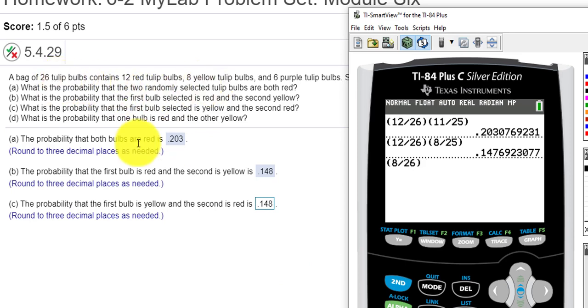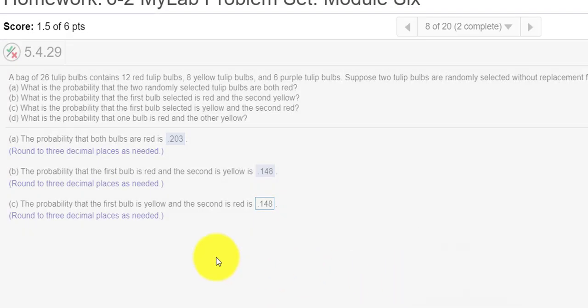That's 8 yellow out of 26 bulbs is my first pick. And my second pick would be the red, which would be 12 out of 25. Okay, so this is really the same problem, except we switched the denominators. But that shouldn't make a difference. Check answer, great job.